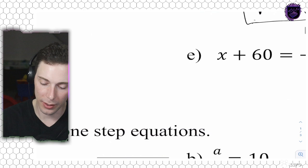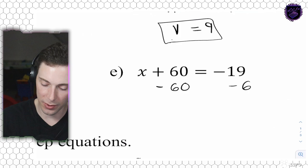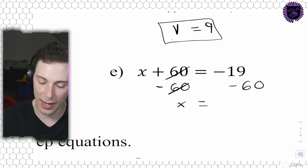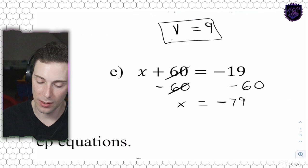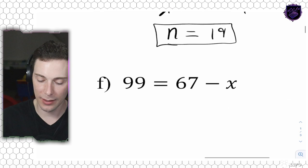Next: X plus 60 equals negative 19. Some integers in here. Let's subtract 60 from both sides. That cancels out, leaving X equal to negative 19 minus 60. So that's negative 79.